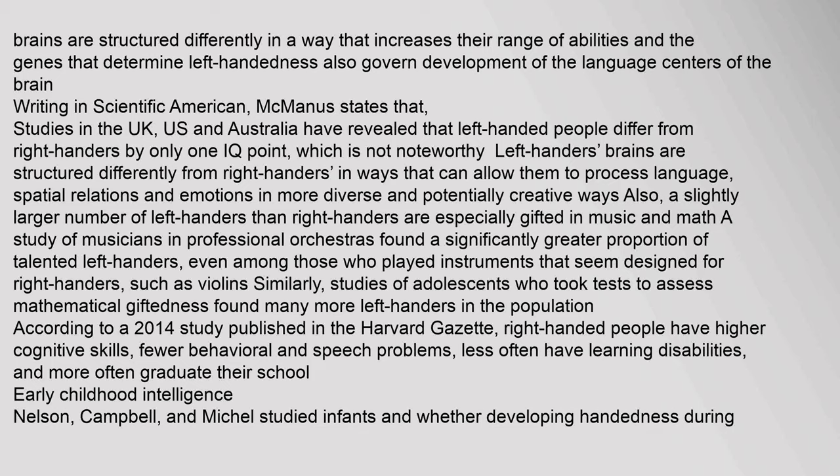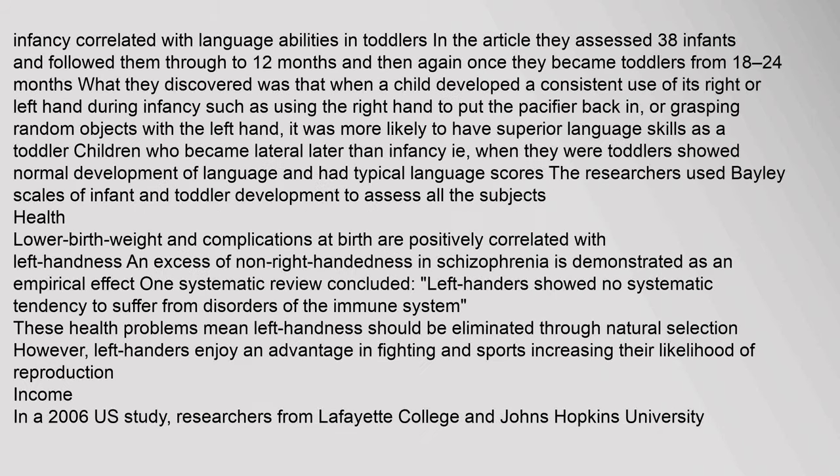Early Childhood Intelligence: Nelson, Campbell, and Michel studied infants and whether developing handedness during infancy correlated with language abilities in toddlers. They assessed 38 infants and followed them through to 12 months and then again once they became toddlers from 18 to 24 months. What they discovered was that when a child developed a consistent use of its right or left hand during infancy — such as using the right hand to put the pacifier back in, or grasping random objects with the left hand — it was more likely to have superior language skills as a toddler. Children who became lateral later than infancy showed normal development of language and had typical language scores. The researchers used Bayley Scales of Infant and Toddler Development to assess all the subjects.